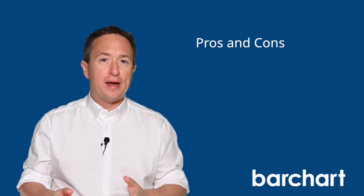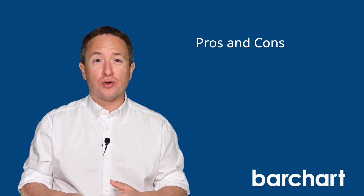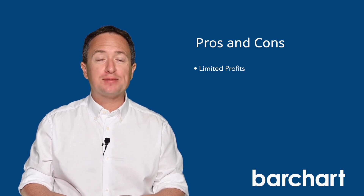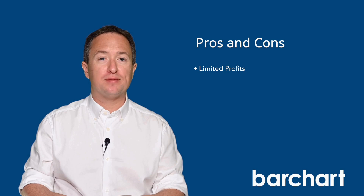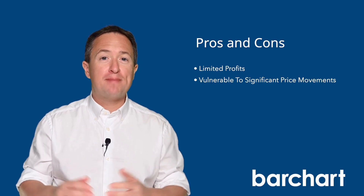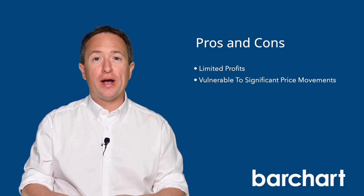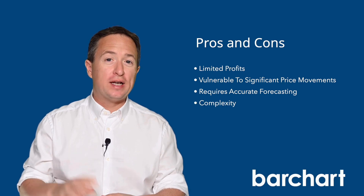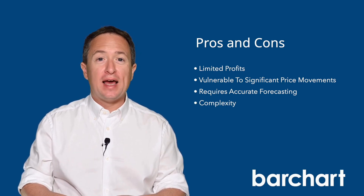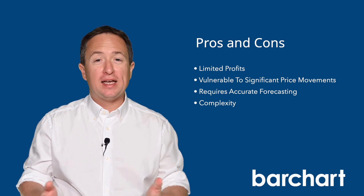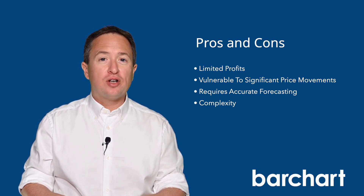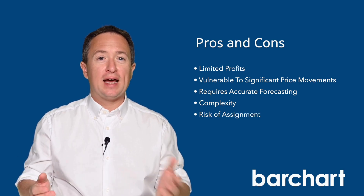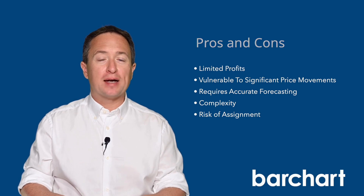However, it's worth mentioning that short iron condors, like all short options trades, have limited profitability, which is capped at the net credit that you receive. The strategy is also vulnerable to massive price swings and requires accurate forecasting and analysis. Further, with its four trade legs, higher commissions and trading fees are taken out of your profit. Iron condors can also be susceptible to early assignment on both the downside and the upside, which can impact the trade.